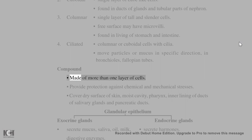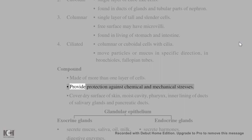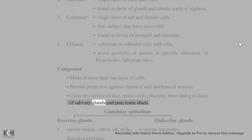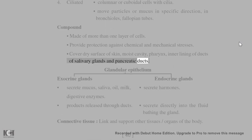Compound epithelium is made of more than one layer of cells; provides protection against chemical and mechanical stresses. It covers the dry surface of skin, moist cavities such as pharynx, and inner lining of ducts of salivary glands and pancreatic ducts.